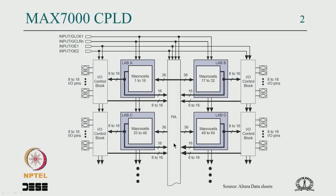We looked at the MAC 7000 PLD from Altera as an example. CPLDs are hierarchical PLDs consisting of simple PLD blocks interconnected to a switch. There are 16 macro cells — AND-OR with programmable flip-flops — giving 16 outputs across 4 blocks, with an interconnection where the AND gate inputs come from 36 lines going into a huge switch.